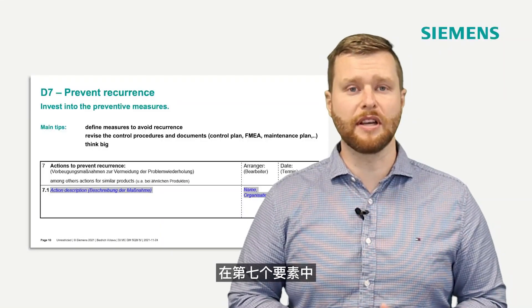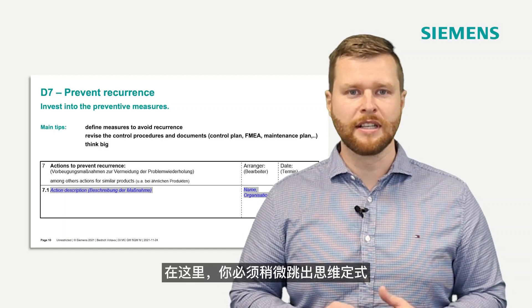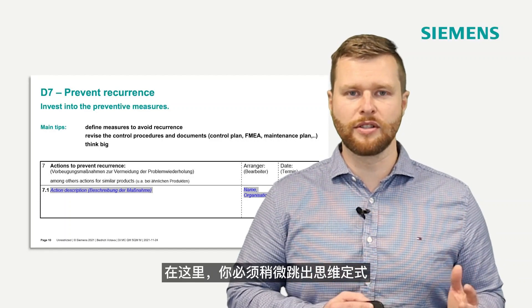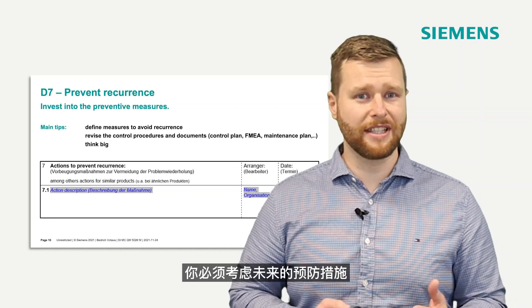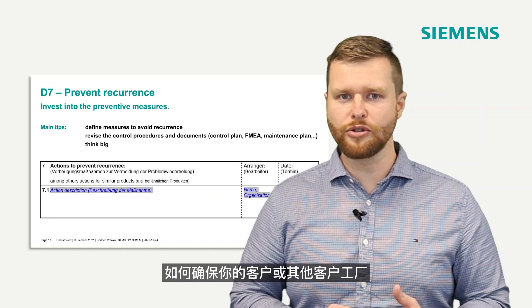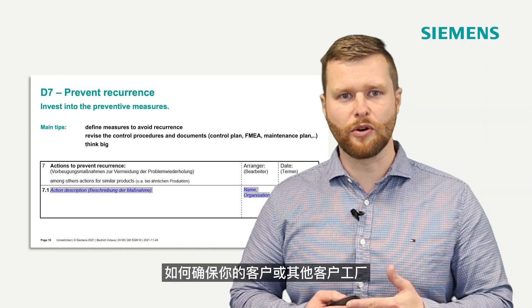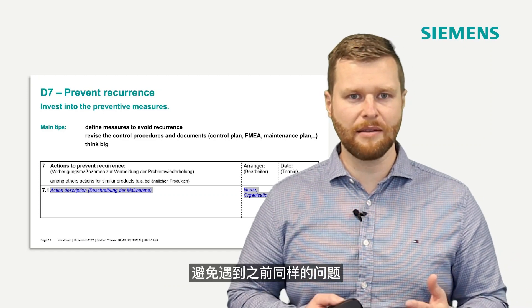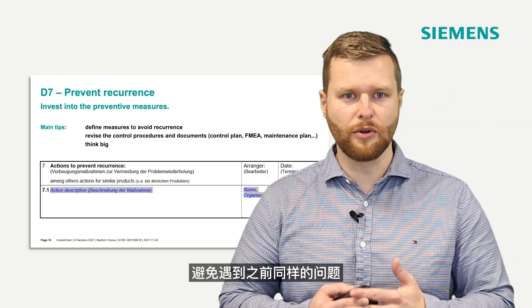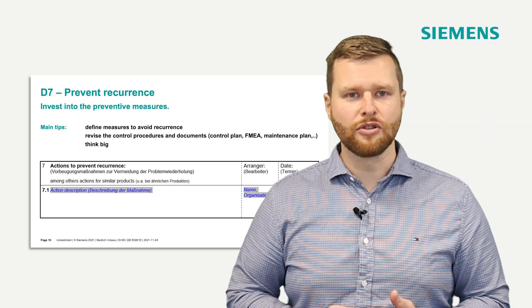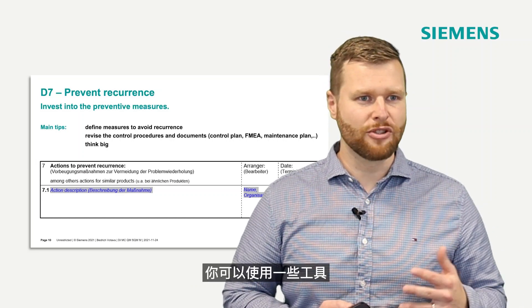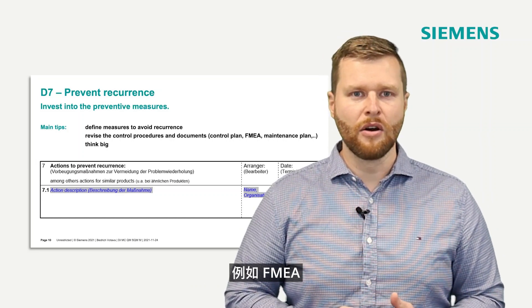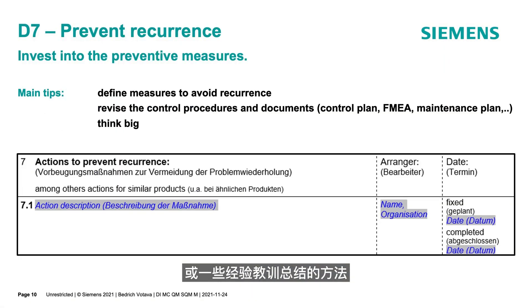In discipline number seven, you have to think a little bit outside the box. You have to think about preventive actions in the future — how to secure your customer or other customer plants against the same failure as before. You can use tools like FMEA or lessons-learned procedures to really invest right now into preventive actions.